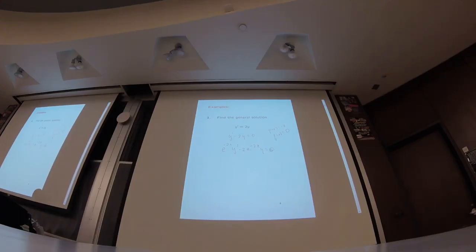e to the minus 2x is not 0 ever. So, now I have a new equation, and it's equivalent to the old. These two equations are equivalent. They have the same solution set. Multiplying an equation by a non-zero quantity does not change the solutions. It changes the equation, but it doesn't change the solutions.